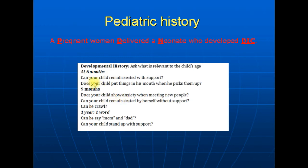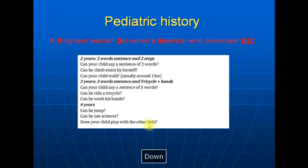Developmental history questions by age: At six months — can your child remain seated with support? Does your child put things in his mouth when he picks them up? Does your child show anxiety when meeting new people? Can your child remain seated without support? Can he crawl? Can he say mom and dad? Can your child stand up with support? Can your child say a sentence of two words? Can he climb the stairs by himself? Can your child walk? Can your child say a sentence of three words? Can he ride a tricycle? Can he wash his hands? At four years — can he jump? Can he use scissors? Does he play with other kids?